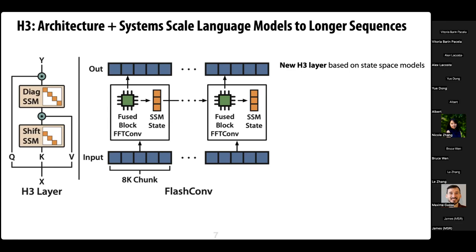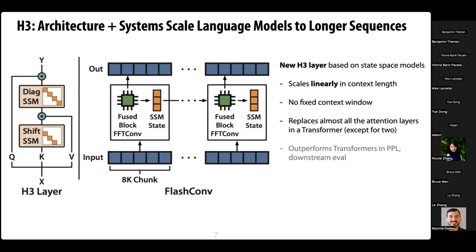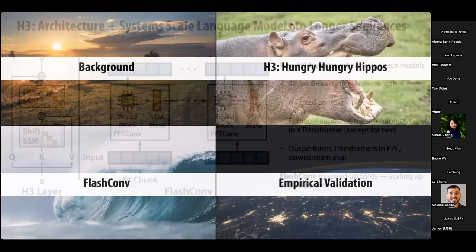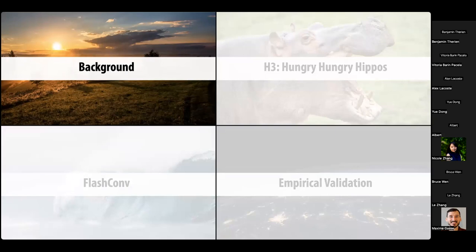We're asking: can we replace the attention layer with something subquadratic? In this paper we use state space models to do that. The H3 layer scales linearly in context length, has no fixed context window, and can replace almost all attention layers in a transformer except two we kept for quality. We found we could outperform transformers on downstream metrics like perplexity. We also introduce a new systems contribution called FlashConv that speeds up state space models, and we scaled up to 2.7 billion parameter models.